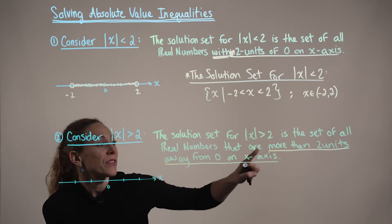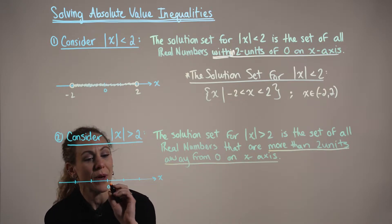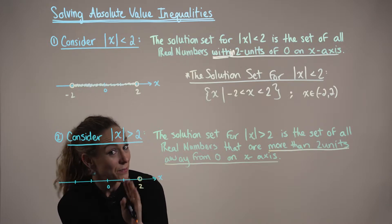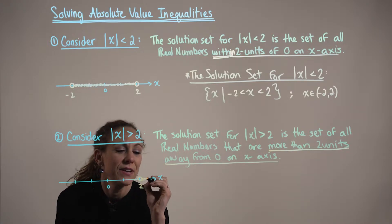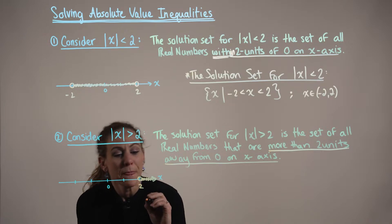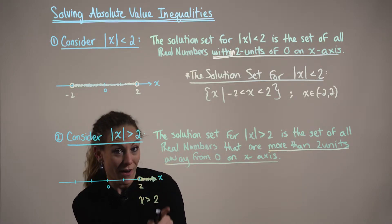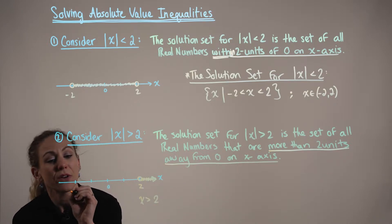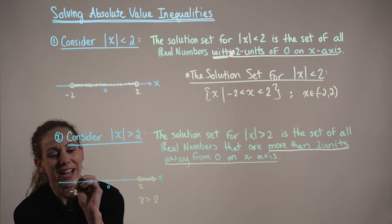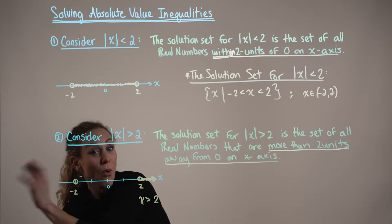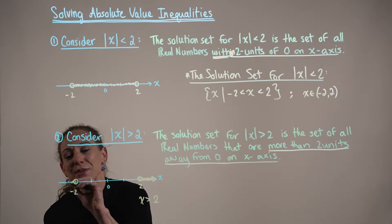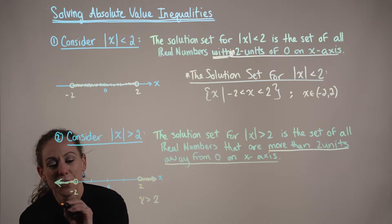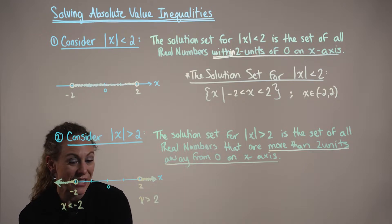If we want the real numbers that are more than 2 units away, we know 2 is exactly 2 units away, so again we draw an open circle at 2 because x must be greater than this. Here is the set of all x values where x is greater than positive 2. And don't forget, negative 2 is also exactly 2 units away from 0 on the x-axis, but we want all real numbers more than 2 units away, so we shade the x values moving in an infinitely negative direction, where x is strictly less than negative 2.